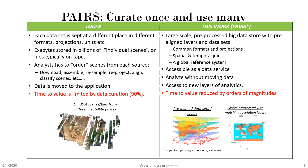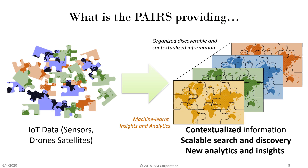PAIRS, which stands for Physical Analytics Integrated Repository and Services, is a curate-once and use-many paradigm. We preprocess big data, store it into common formats, perform spatial-temporal joins, and bring it into a global reference system. PAIRS takes IoT data originating from heterogeneous sources such as sensors, drones, and satellites, and organizes them into discoverable, contextualized information in a single global referencing system.